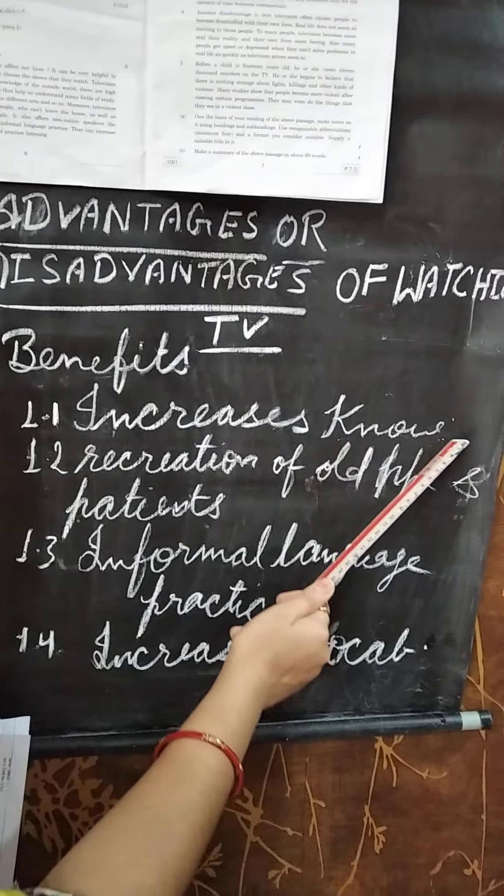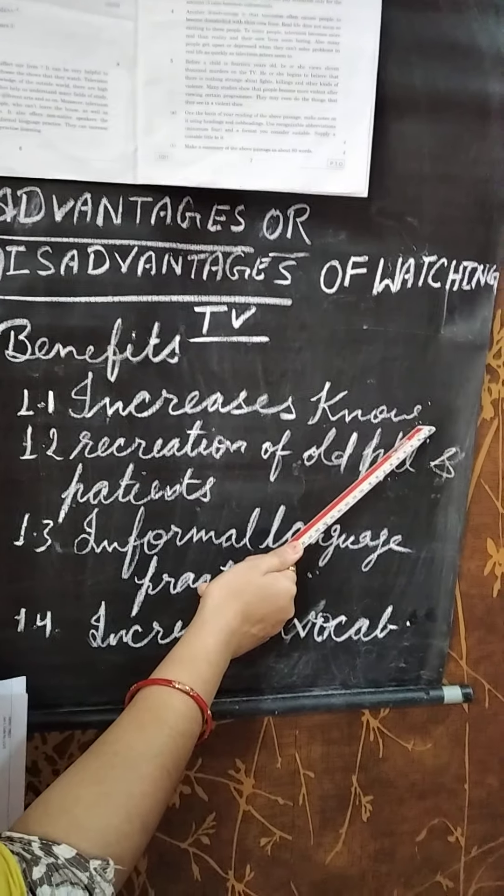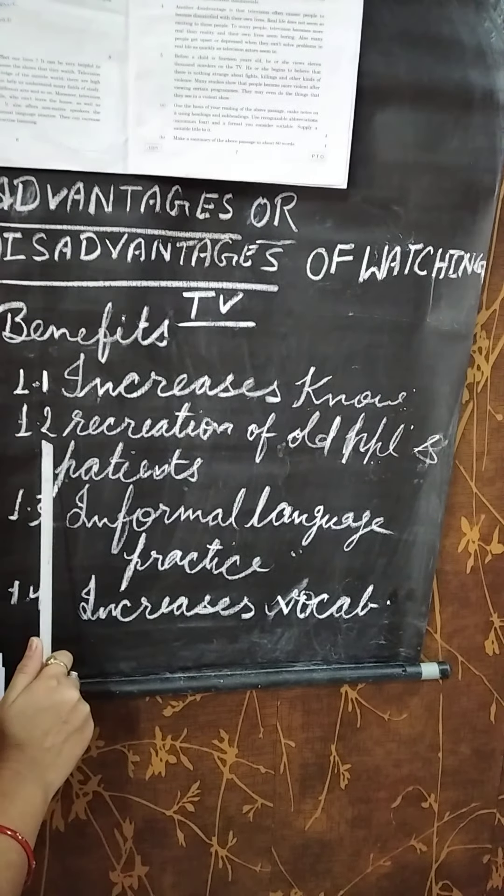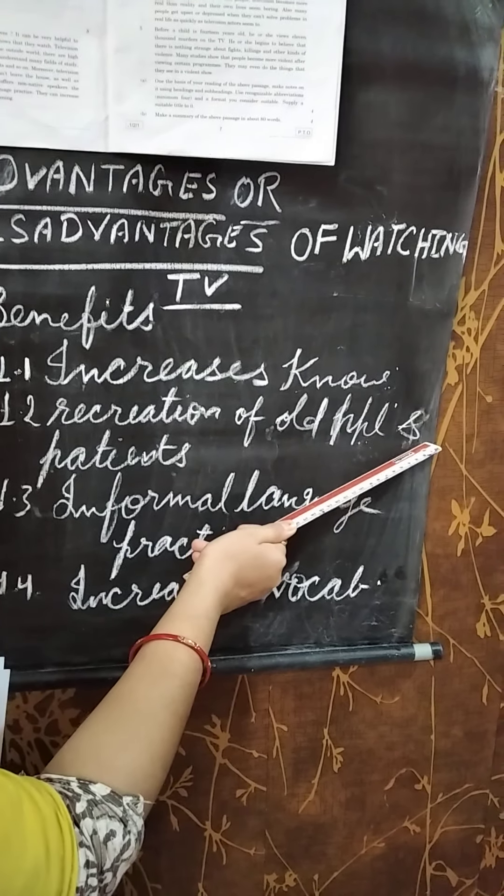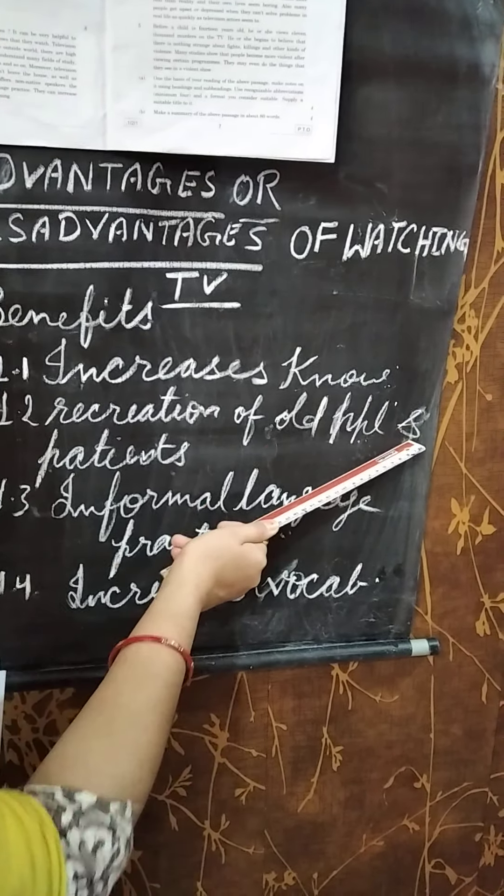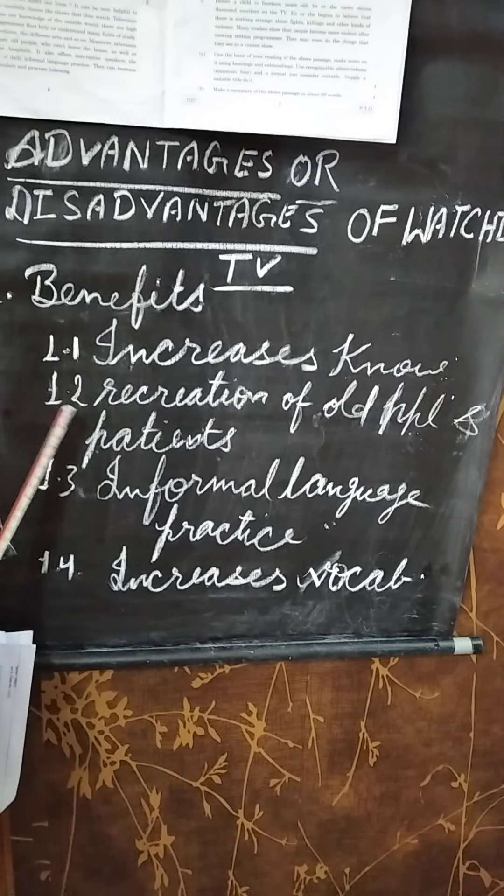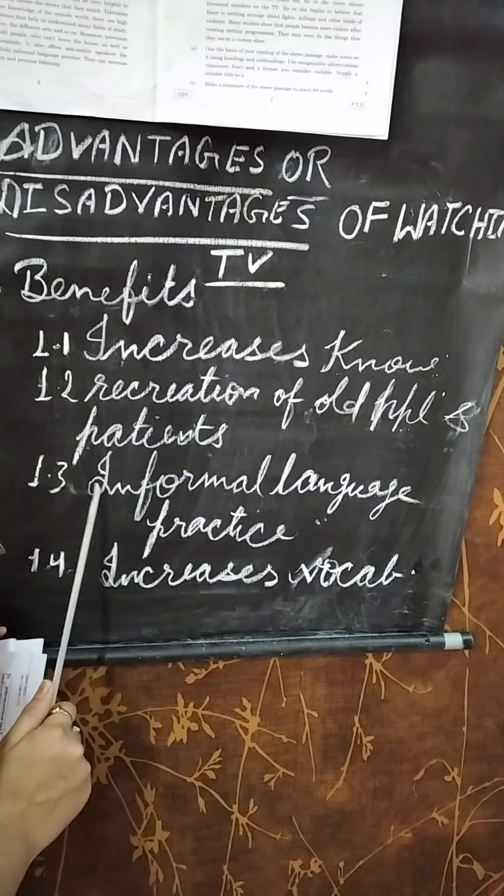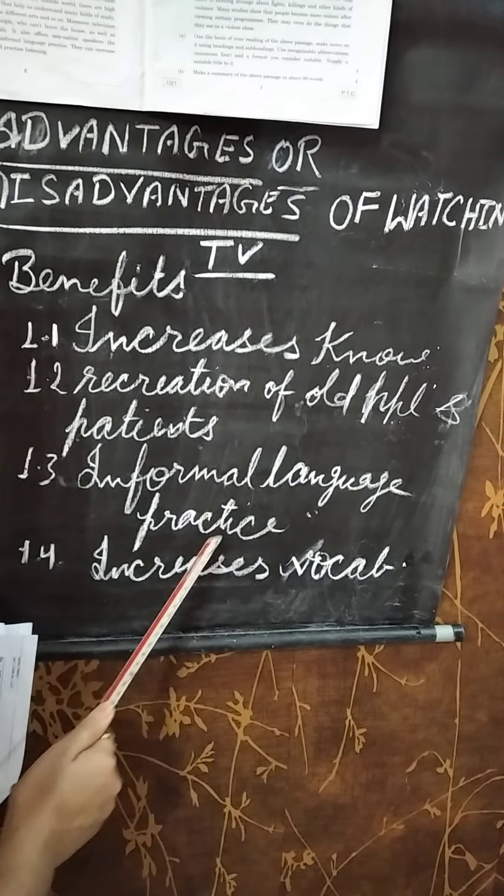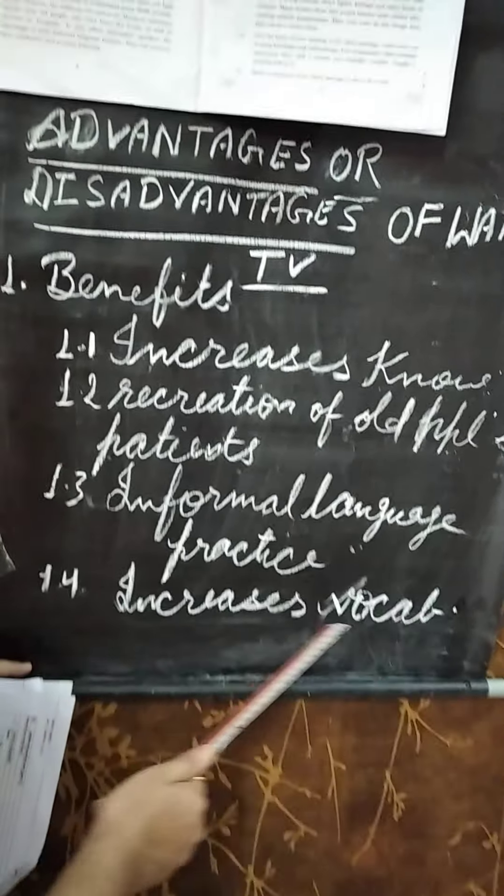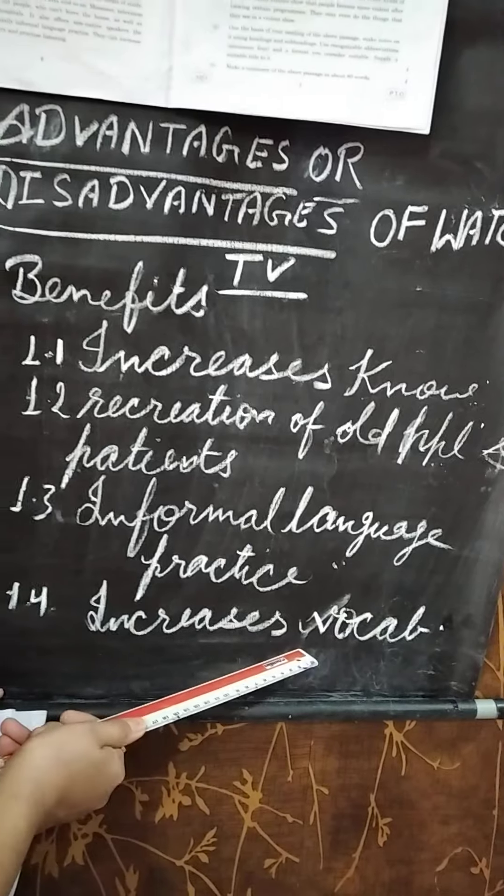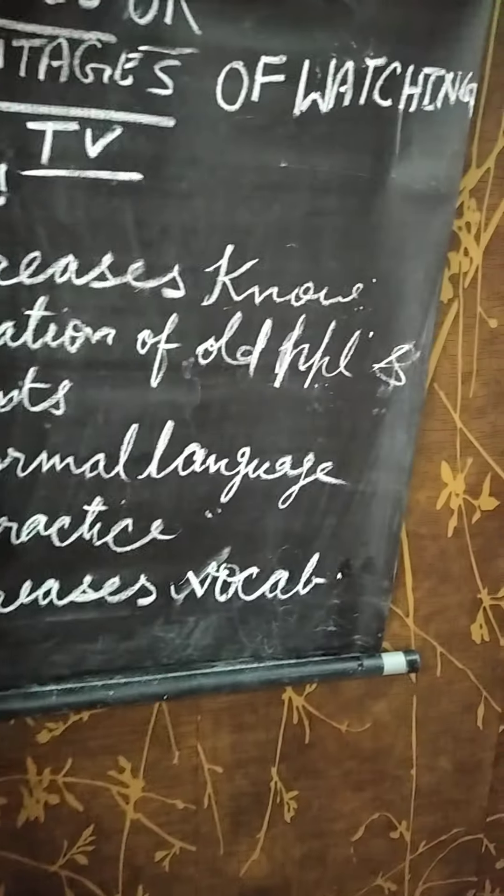Increases K-N-O-W, know. It is the abbreviation used here. Then 1.2, recreation of old PPL, short form of people. This S is made, patients. Then 1.3, informal language practice. 1.4 increases vocab. Vocab again, this is the abbreviation used here.